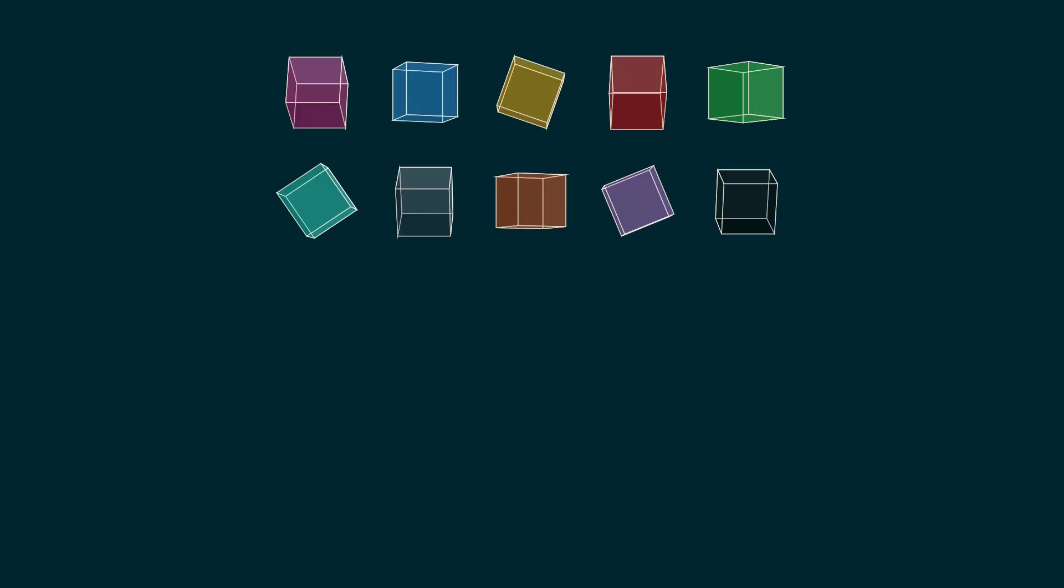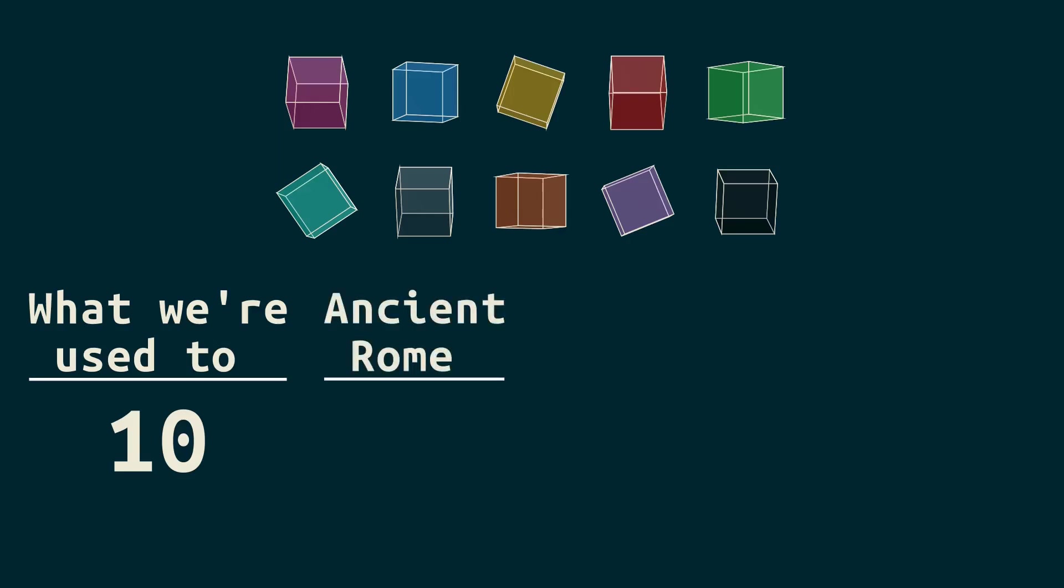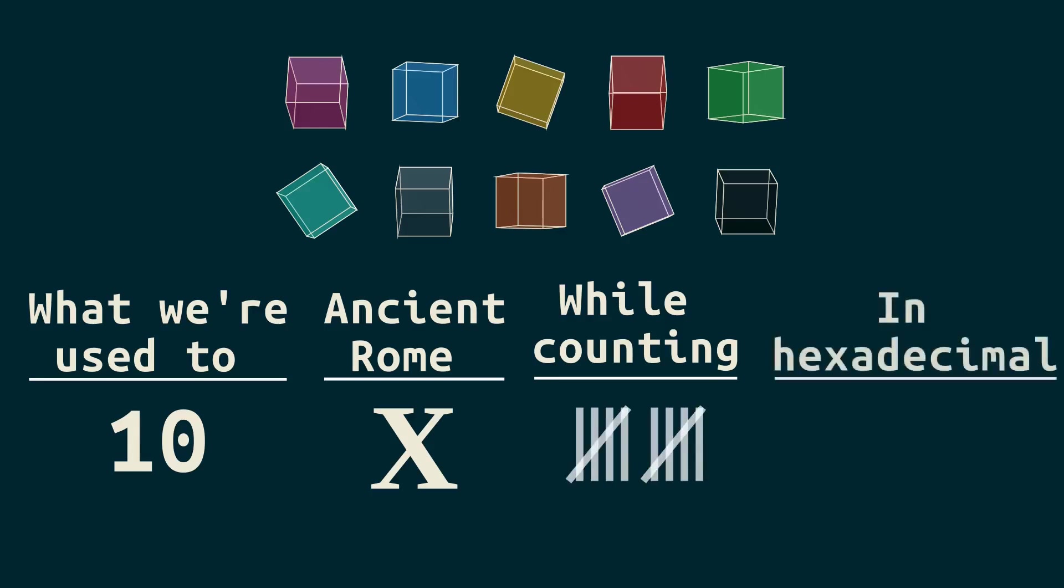This is 10 really. It's 10 units, 10 things. Here, 10 colorful cubes. It's an idea that's independent of how you write it down. See, we're used to writing it this way, but you could think of other ways to write it. If you were in ancient Rome, how would you write it? Like this. If you were counting things out one by one, marking them as you go, you might write 10 down this way. And in hexadecimal, we write it like this. A.